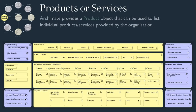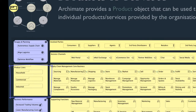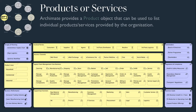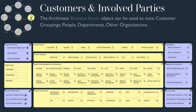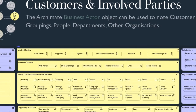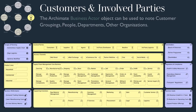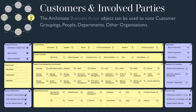ArchiMate provides a standard product object that can be used to list products and services provided by an organization. It can be hierarchical if needed to reflect product bundles or groupings. The business actor object can be used to reflect customers, people, business units, or other organizations. In this example, I use the concept of involved parties to list all of the various parties that may receive a service from the business, either as a direct customer or an intermediate such as agents and retailers. This will have value when we map out the application landscape and the integration model with external parties.